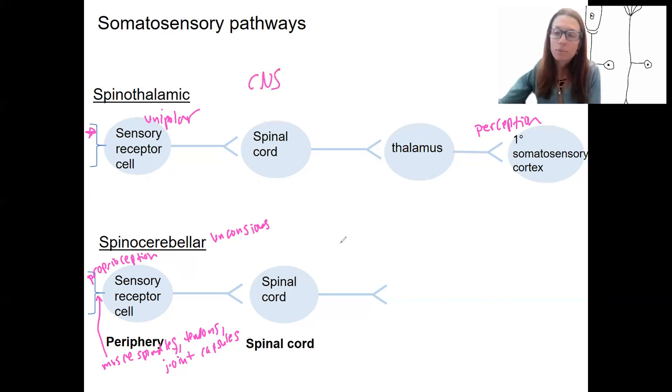And then from the spinal cord, instead of traveling to the thalamus, it's still going to travel to the brain, but we're going to go to the cerebellum. So cerebellum is the little brain that's responsible for a lot of this awareness of body position and unconscious adjustment to allow for coordination.